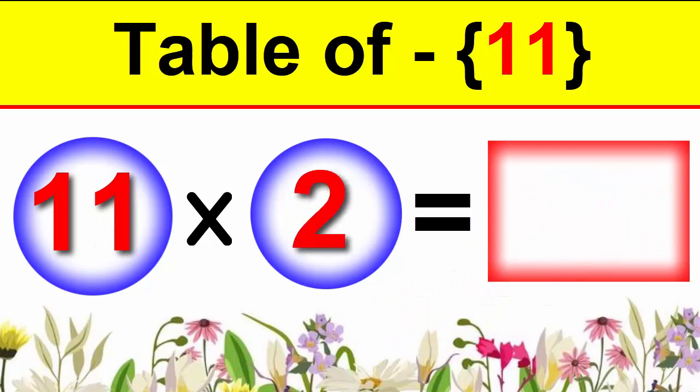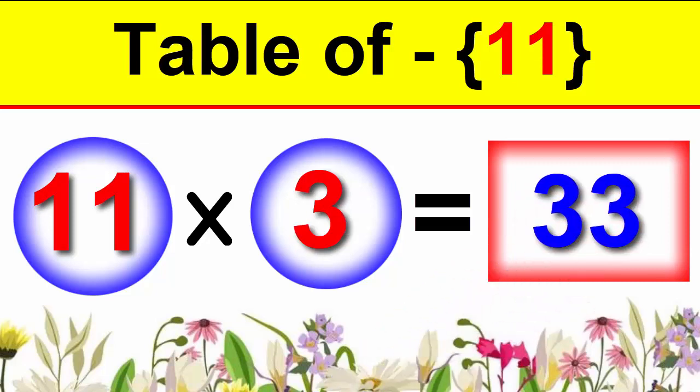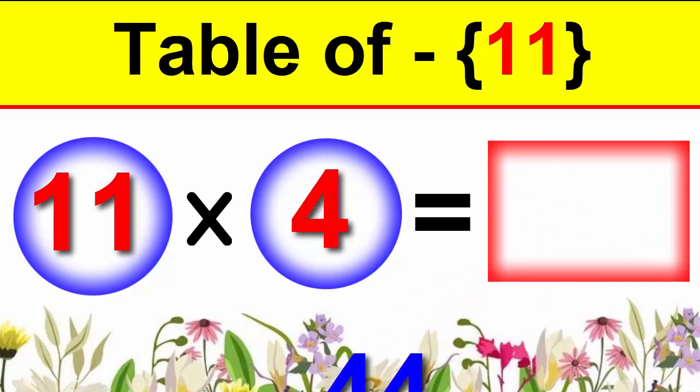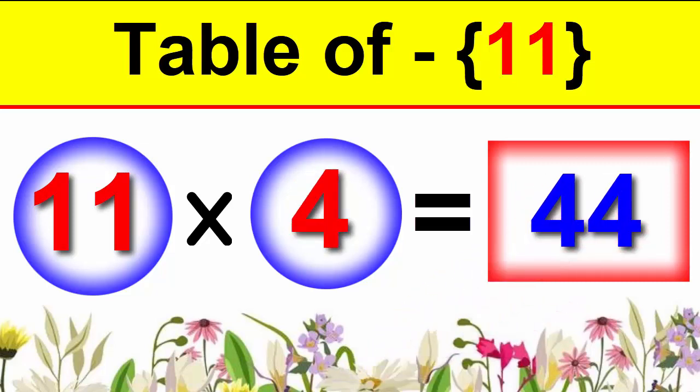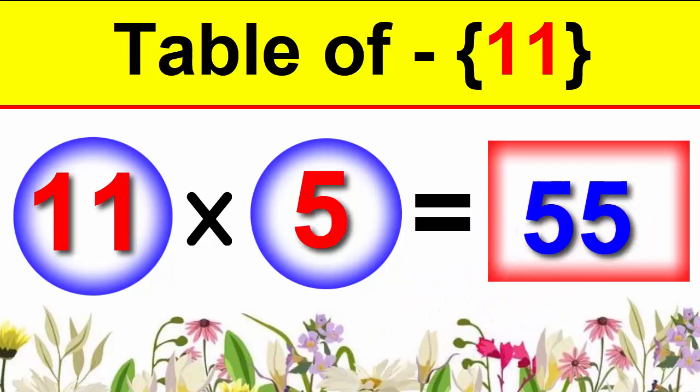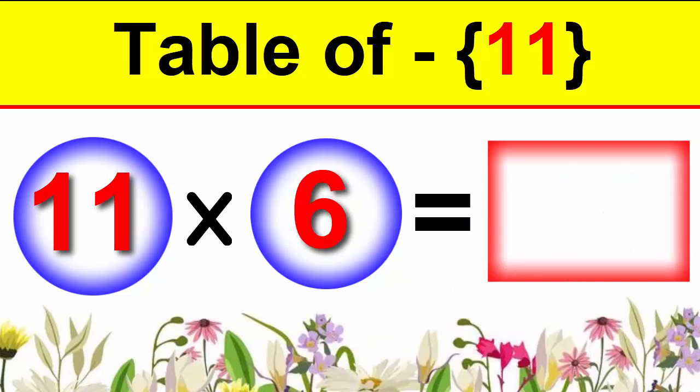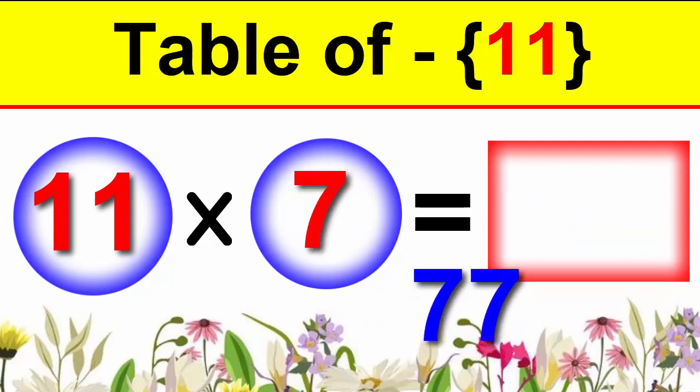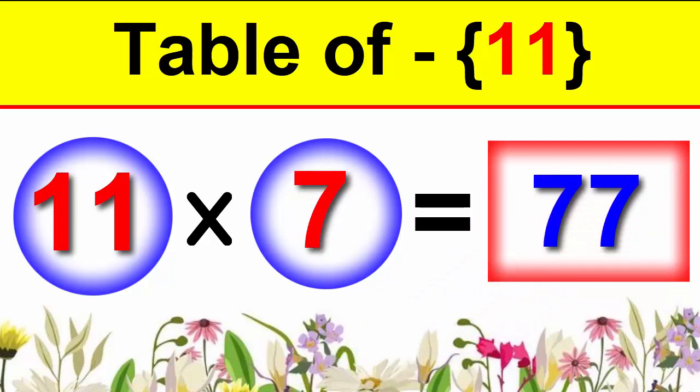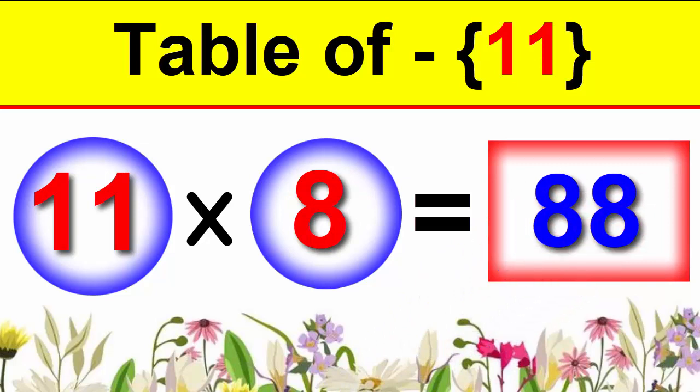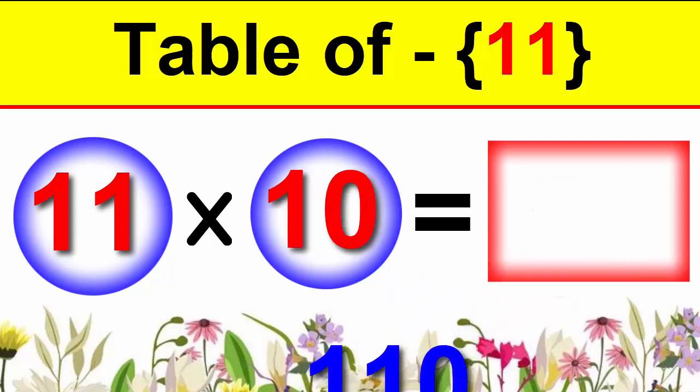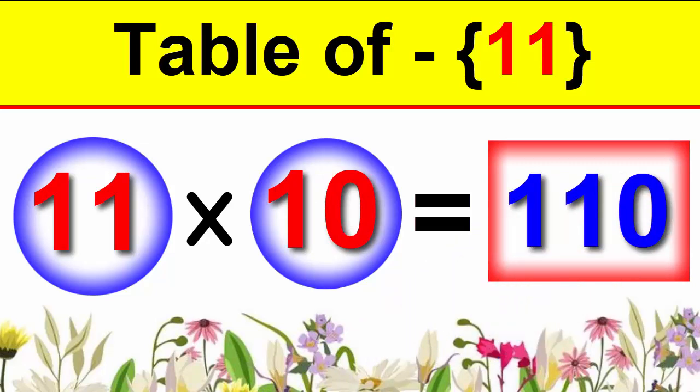11×1 is 11, 11×2 is 22, 11×3 is 33, 11×4 is 44, 11×5 is 55, 11×6 is 66, 11×7 is 77, 11×8 is 88, 11×9 is 99, 11×10 is 110.